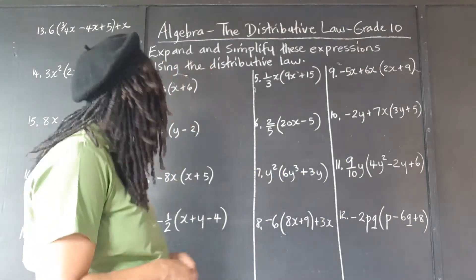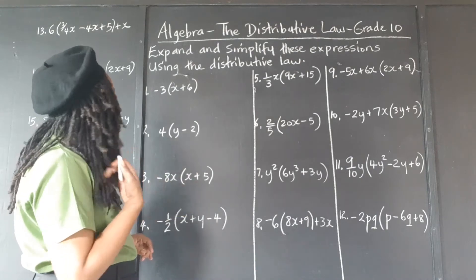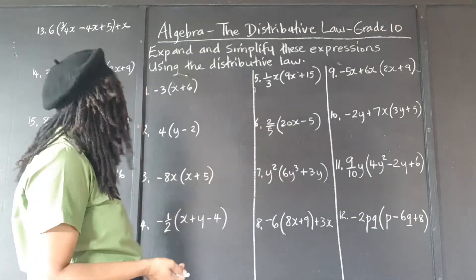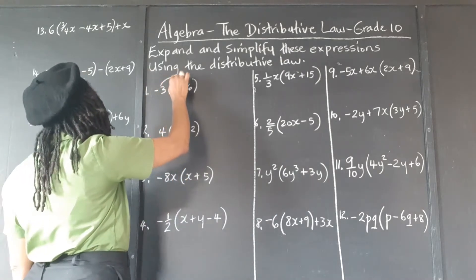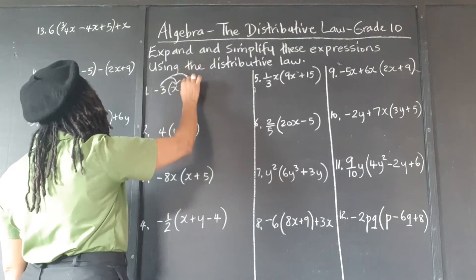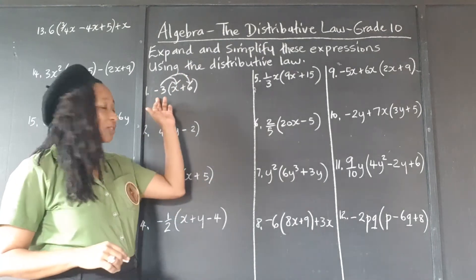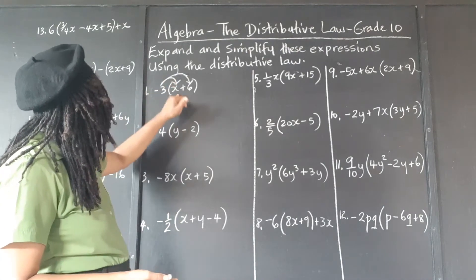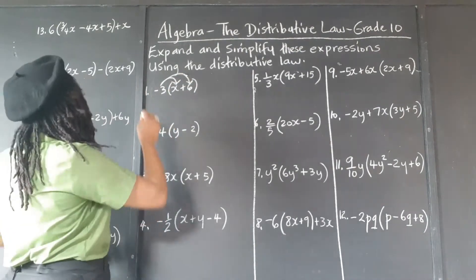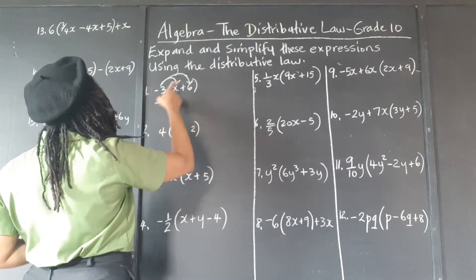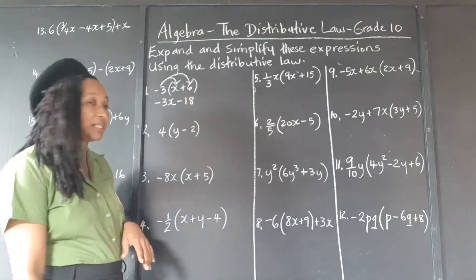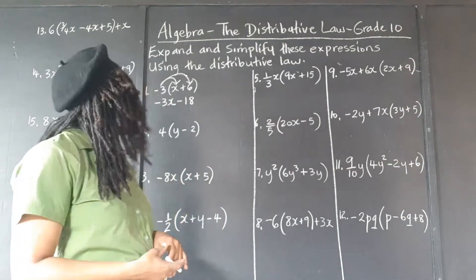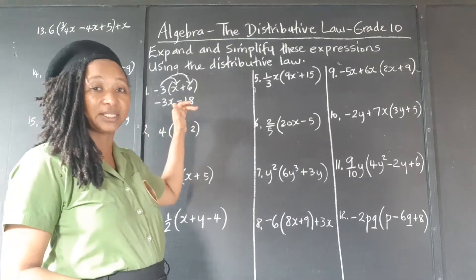I'll do arrows for the first couple, then we'll work it in our heads. So it's negative 3 times x and negative 3 times 6. Negative 3 times x is negative 3x; negative 3 times 6 is negative 18. Since this is an x term and a constant term, we can't add or subtract them. So this is actually in its simplest form — we expanded it and can't simplify it any further.